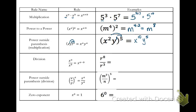Pause your video and copy down the division line. With division, x to the a over x to the b equals x to the a minus b — we're subtracting the exponents. Here's why: if we expand r to the 8th over r to the 3rd, writing r eight times on top and three times on the bottom, then cancel three r's from each, we're left with five r's on top and nothing on the bottom — that's r to the 5th.